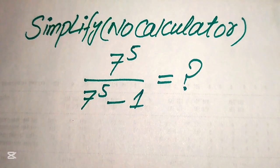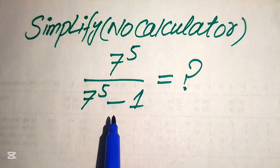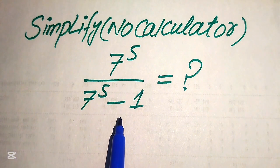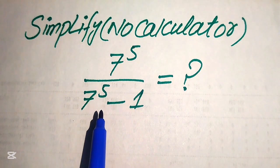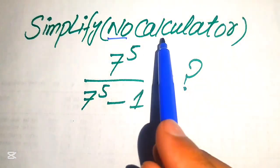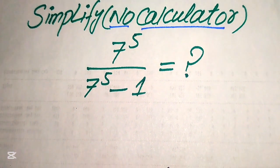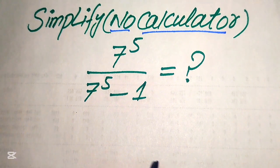Hello everyone. How to simplify this nice algebraic expression: 7 to the power of 5 divided by 7 to the power of 5 minus 1. We write this algebraic expression into simplified form. Note that a calculator is not allowed in this problem, so we need to show all of the working on paper. If you have another method in mind, please don't hesitate to write it in the comment section.